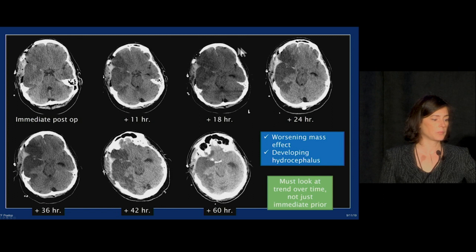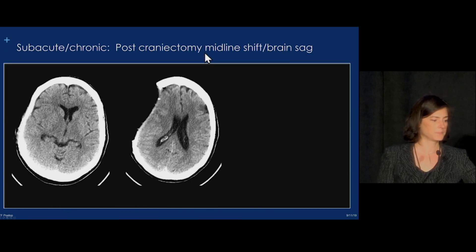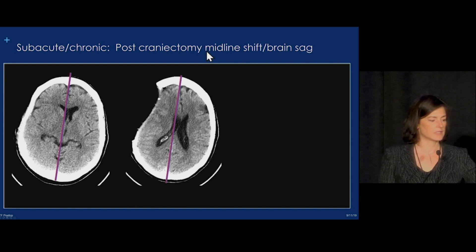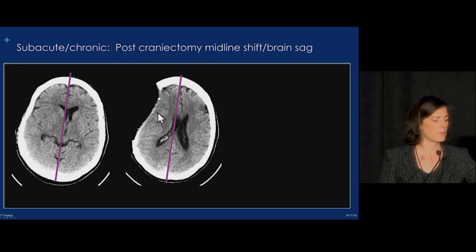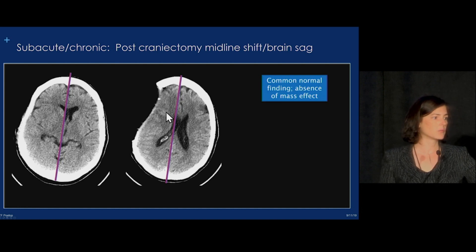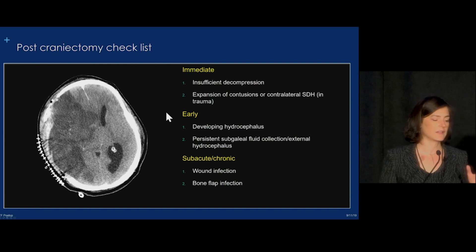Despite the very good decompression, this patient continued to have mass effect and the family opted for no further intervention. In a different case of decompressive craniectomy, we see midline shift going in the wrong direction — right to left shift after a right decompressive craniectomy. In this case, the brain is quite slack in neurosurgical terms, with no mass effect. This is a common normal finding of brain sag after decompressive hemicraniectomy. As long as there's no mass effect, it's not something to worry about.